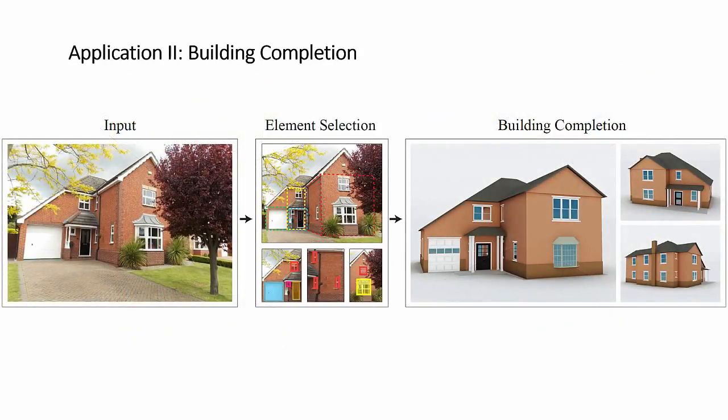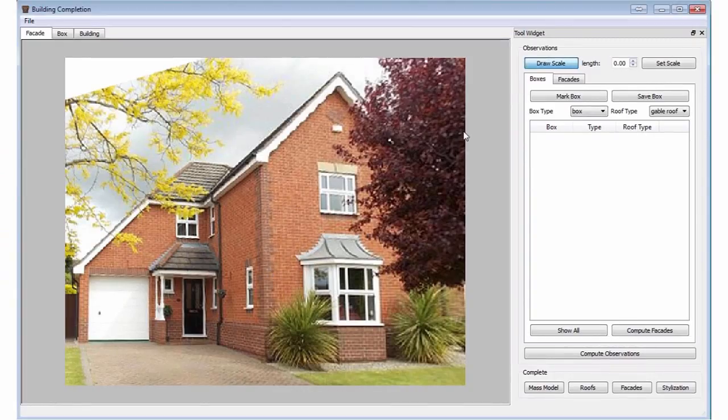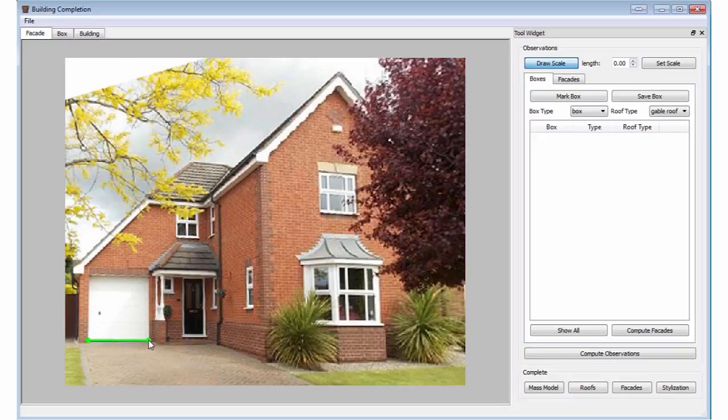The other application is building completion. Starting from a single image, a user can mark observed parts and then automatically compute a complete 3D building model. First, the user can specify the scale of the image, in this case using the garage. Next, the user specifies the observed faces of the mass model.